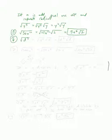What about the square root of d to the seventh? We need to peel one of those d's off, leaving d to the sixth. The square root of d to the sixth is d cubed. So the answer is d cubed times the square root of d.